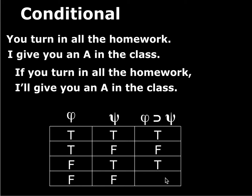If they're both false — you didn't turn in all the homework and I didn't give you an A — the conditional is also true. So the take-home message is: a conditional is always true except with one particular pattern: true antecedent, false consequent. That's the only situation in which you'll get a false conditional.